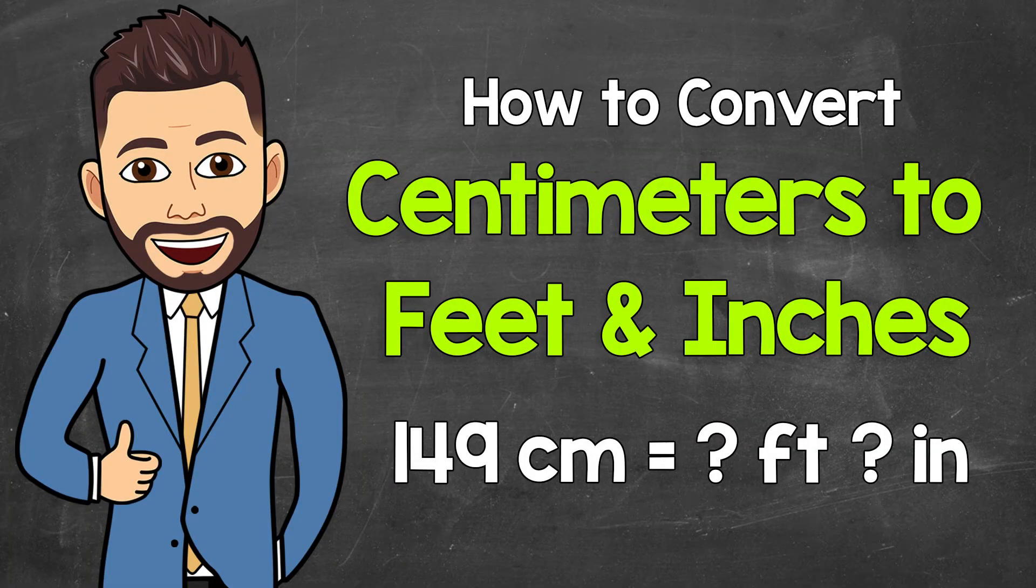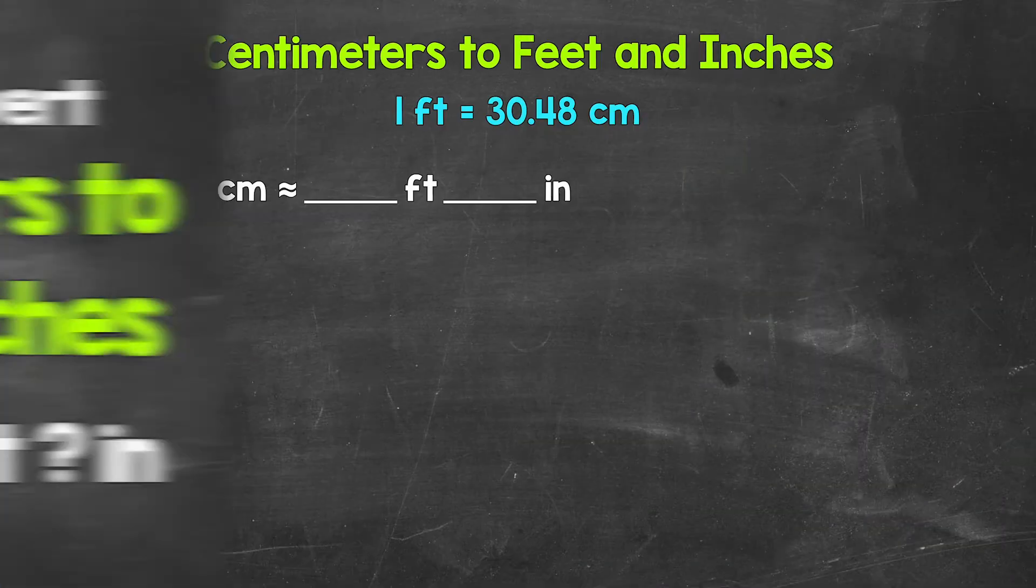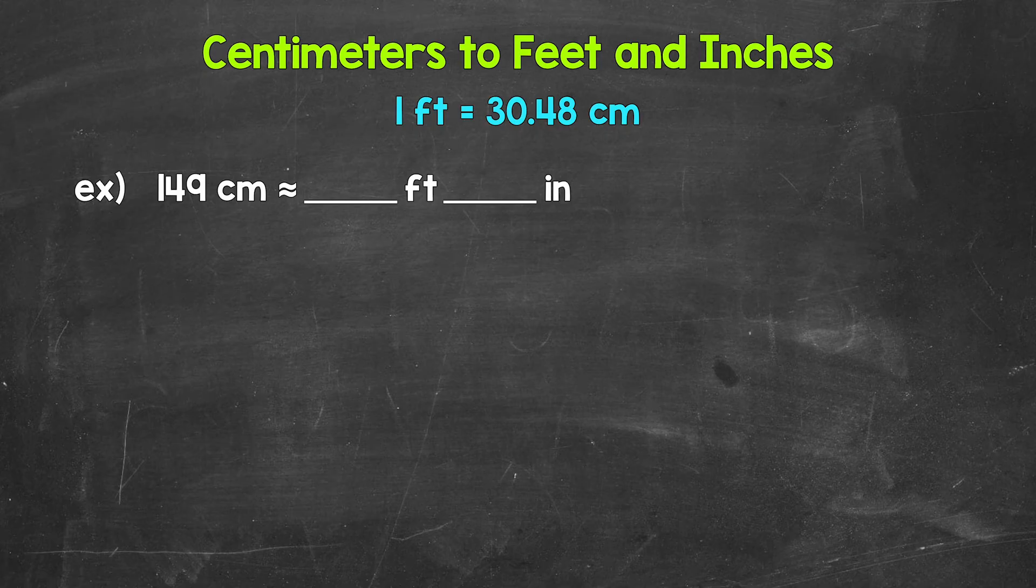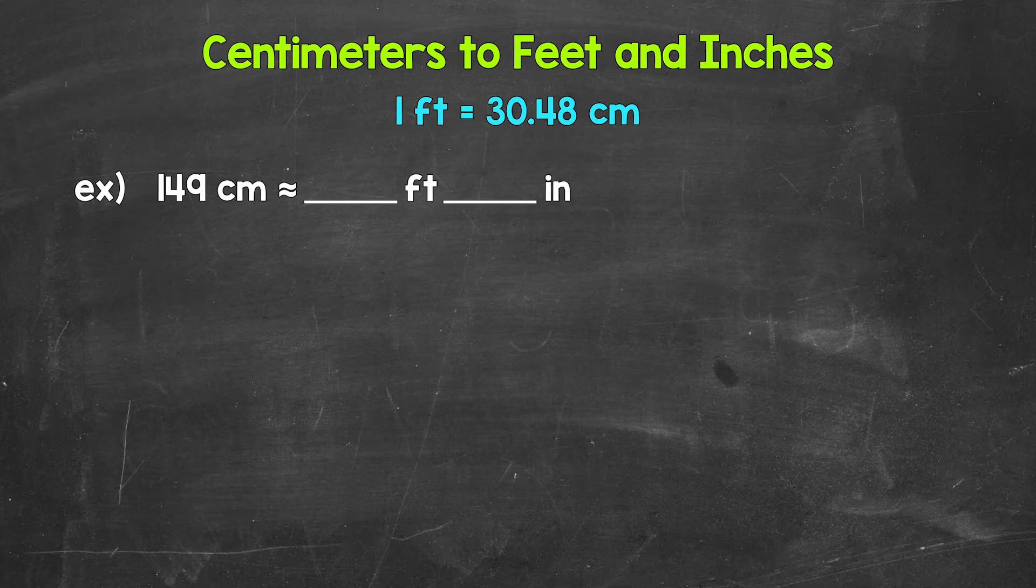Welcome to Math with Mr. J. In this video, I'm going to cover how to convert centimeters to feet and inches. To start, there are 30.48 centimeters in a foot. In other words, one foot equals 30.48 centimeters.